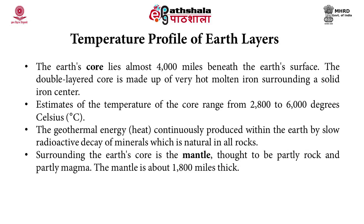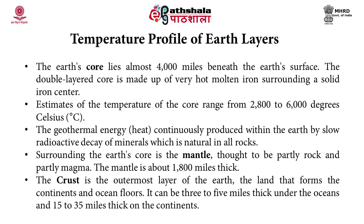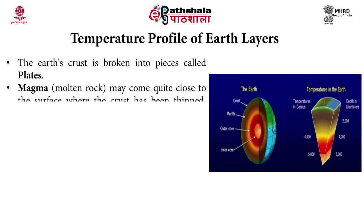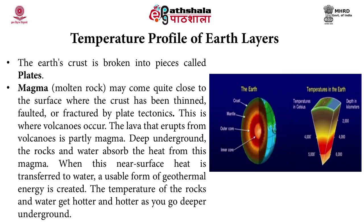Surrounding the earth's core is the mantle, thought to be partly rocky and partly magma. The mantle is about 1800 miles thick. The crust is the outermost layer of the earth, forming the continents and ocean floors. It can be 3 to 5 miles thick under the oceans and 15 to 35 miles thick on the continents. The earth's crust is broken into pieces called plates. Magma, the molten rock, may come close to the surface where the crust has been thinned, faulted, or fractured by plate tectonics. This is where volcanoes occur. Deep underground, rocks and water absorb heat from magma, and when this near-surface heat is transferred to water, a usable form of geothermal energy is created.